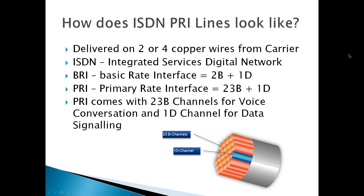Here in this picture we can see the actual looks of this PRI at its greatest. As we can see, it's a single digital pipe that has integrated 23 channels for voice communication and one D channel for call display and other signaling, where our phone systems can read and actually process the information from.